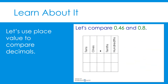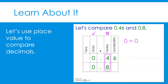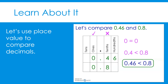Let's compare two more decimals — forty-six hundredths and eight-tenths — using a place value chart. First, write forty-six hundredths in the chart, then eight-tenths. These two decimals do not have the same number of digits, so it's important to line them up according to place value. The ones values are equal — zero equals zero. The tenths values are not the same: four tenths is less than eight tenths. Therefore, forty-six hundredths is less than eight tenths. We do not have to compare the hundredths place because the tenths values were different, and tenths are greater than hundredths. Once we found a difference, we can stop.